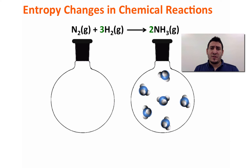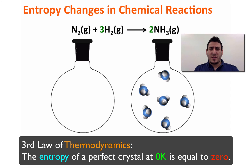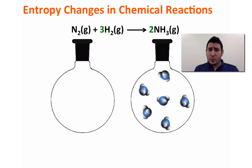Absolute values for many thermodynamic functions such as enthalpy or free energy cannot be determined. However, we can determine the absolute value of entropy. For example, at zero Kelvin the entropy of a perfect crystal is equal to zero. Therefore, when the temperature increases, the degree of disorder in the crystal increases and entropy increases.